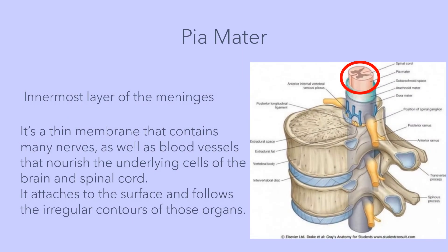Next, we have the pia mater. The pia mater is the innermost layer of the meninges. It's a thin membrane that contains many nerves as well as blood vessels that nourish the underlying cells of the brain and spinal cord. It attaches to the surface and follows the irregular contours of those organs.